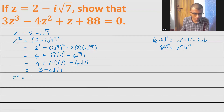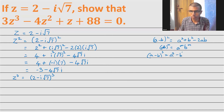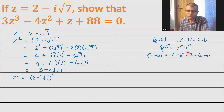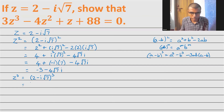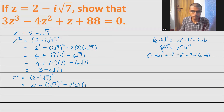Now let's find z³. Stay alert in this calculation. z³ = (2 - i√7)³. The (a - b)³ formula is a³ - b³ - 3ab(a - b). Here a = 2 and b = i√7. So this is 2³ - (i√7)³ - 3 × 2 × i√7 × (2 - i√7).